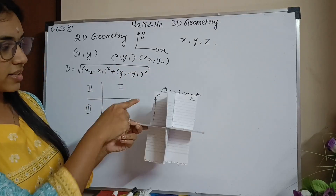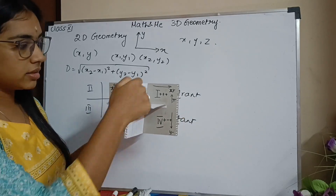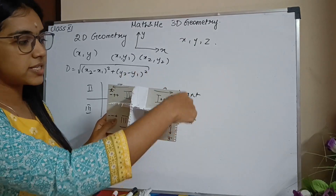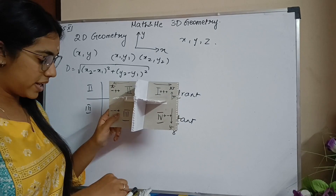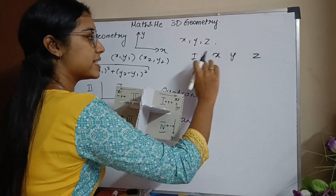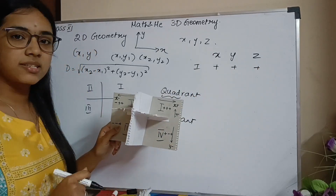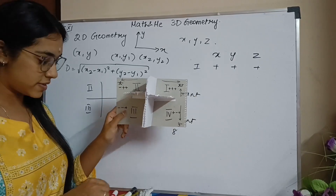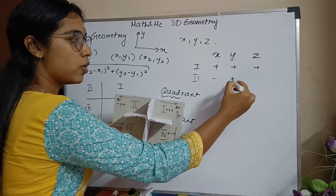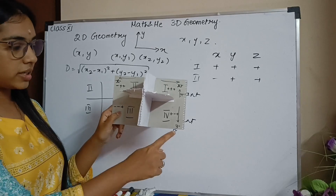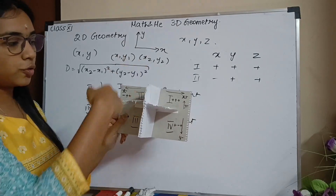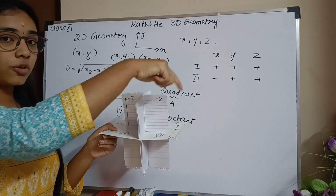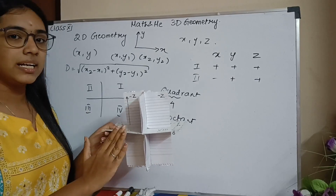The first octant is on the positive z side with positive x and positive y — so in the first octant all values are positive: x, y, z all positive. In the second octant, only x is negative, y is positive, and z is positive. Similarly we fill in the third, fourth, fifth, sixth, seventh, and eighth octants. For the first four octants, z is always positive; when we rotate to the other side, z becomes negative for the remaining four octants.